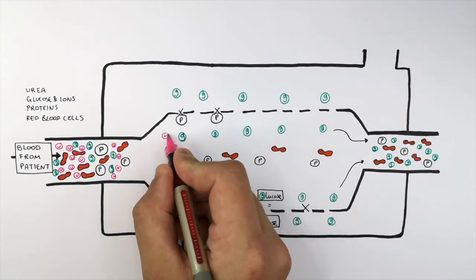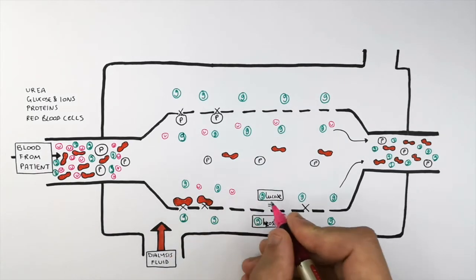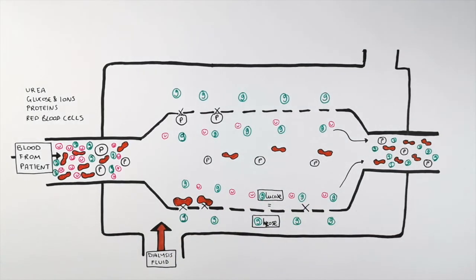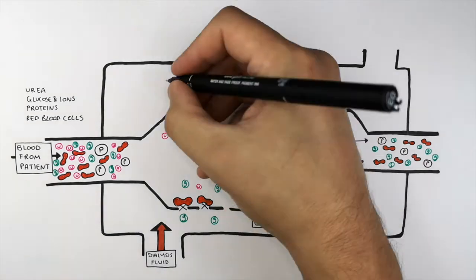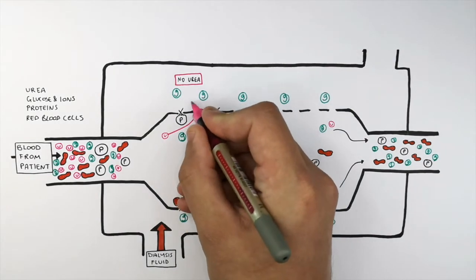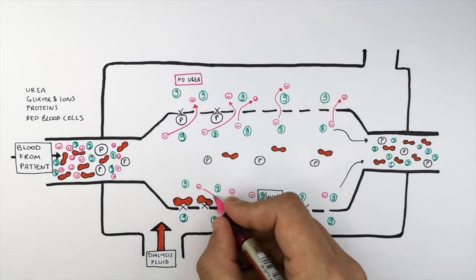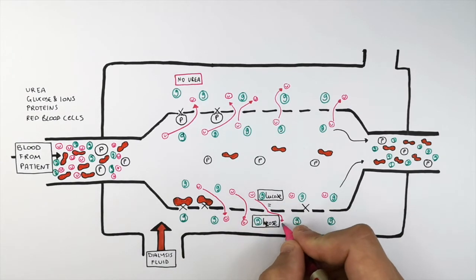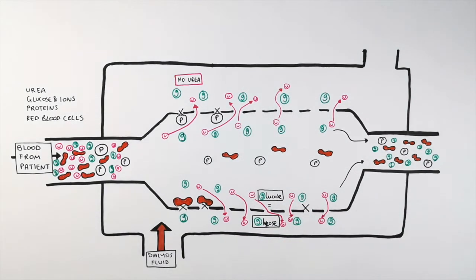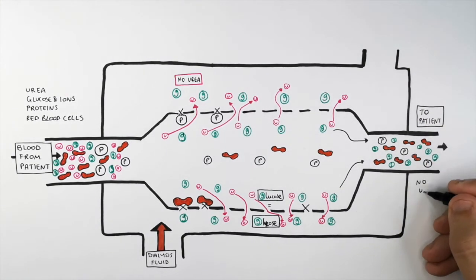The urea flows into the dialysis machine within the patient's blood. The urea is at a higher concentration in the patient's blood than in the dialysis fluid, because there is no urea in fresh dialysis fluid. So the urea diffuses from the high concentration inside the patient's blood into the low concentration of the dialysis fluid. As a result, there should be no urea in the blood as it exits and returns to the patient.